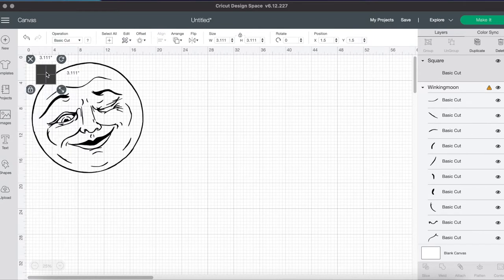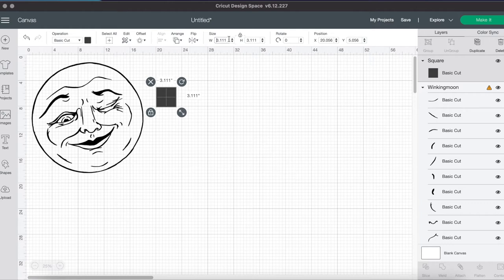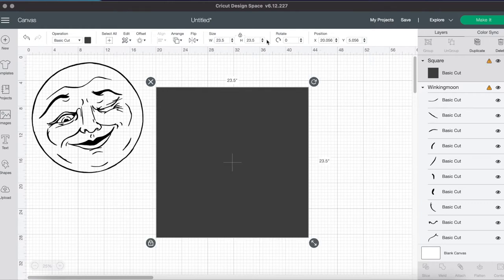Grabbing a square from my shapes panel, I'm going to resize this to the size of my largest mat, which is 11 and a half by 23 and a half. That way I don't exceed that size when I'm making my two separate cuts.